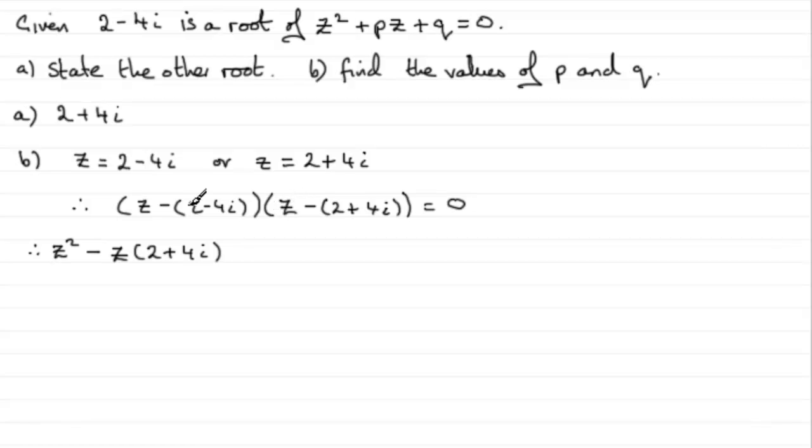Then I'm going to have this z multiplied by minus, and this bracket, 2 minus 4i, so I'm going to have minus z multiplied by the 2 minus 4i. And then down this end, I'm going to have minus times minus, it's going to be positive, and then I'm going to have 2 minus 4i times 2 plus 4i, then multiplied by 2 plus 4i. That's going to equal 0.